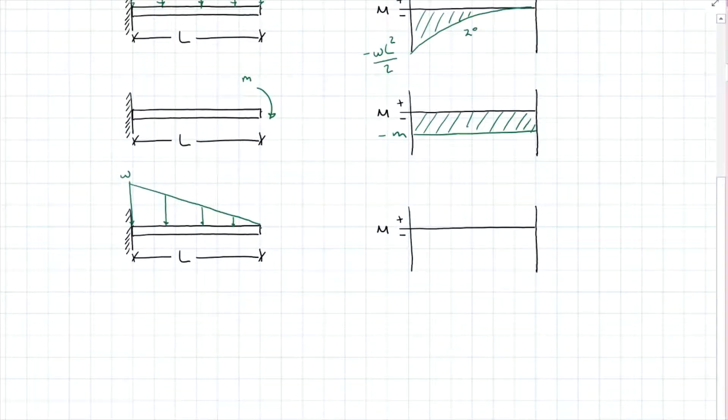And if we have a triangular distributed load, its moment is going to come down at a third degree with a maximum value of negative WL squared divided by 6.